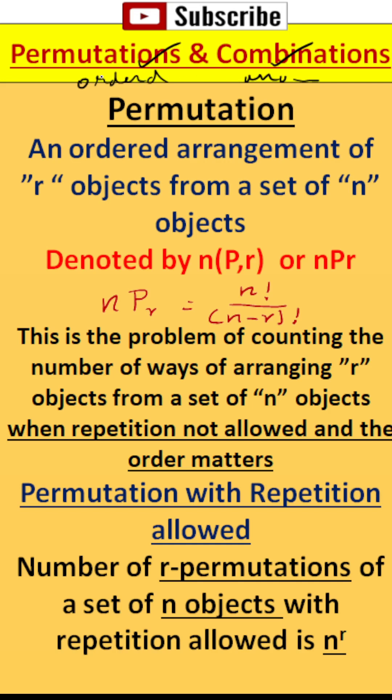If it is ordered selection, then we go with permutation. If it is unordered selection, we go with combinations. So let me start with permutation. Permutation means it is an ordered arrangement or selection of r objects from a set of n objects.